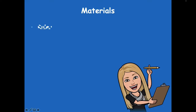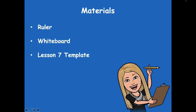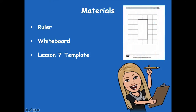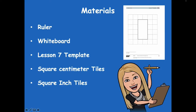The materials that you'll need will be a ruler, a whiteboard, a dry erase board. You'll need the Lesson 7 module template that looks like this. You'll need centimeter tiles, which can be like centimeter cubes if you have those, and square inch tiles. Make sure to pause the video, grab those materials, and then click play when you're ready to begin the lesson.